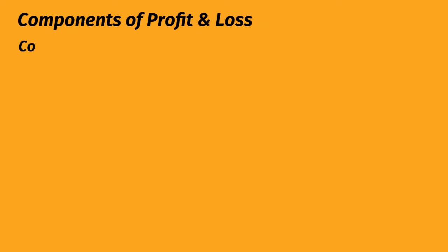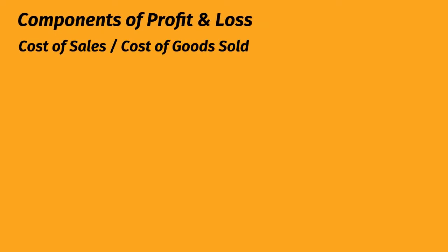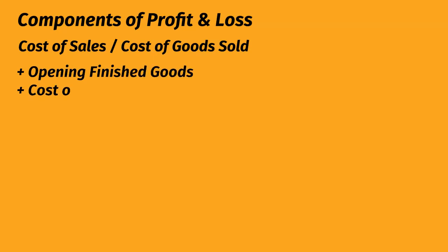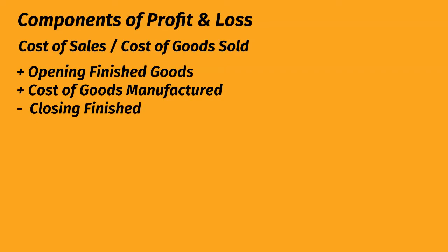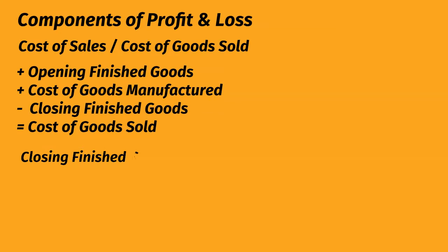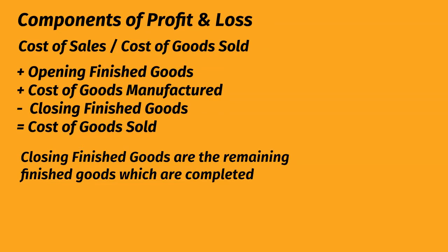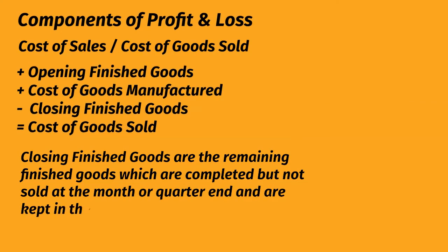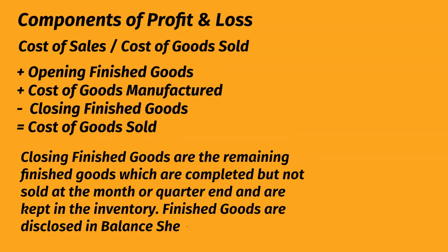Components of profit and loss: Cost of Sales. Add opening finished goods, add cost of goods manufactured, less closing finished goods — equals cost of goods sold. Closing finished goods are the remaining finished goods which are completed but not sold at the month or quarter end and are kept in the inventory. Finished goods are disclosed in balance sheet current assets.